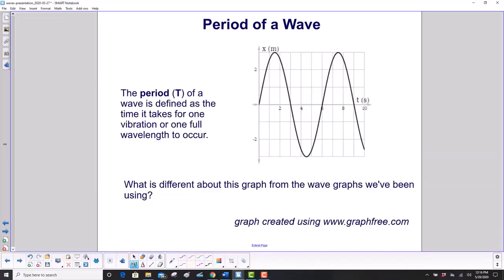The period of a wave is defined as the time it takes for one full vibration or one full wavelength to occur. So let's see, what's the symbol for this? T, capital T. Probably because time is little t. Look at this graph very carefully and see if you can find out what's different from the wave graphs we've been using so far.